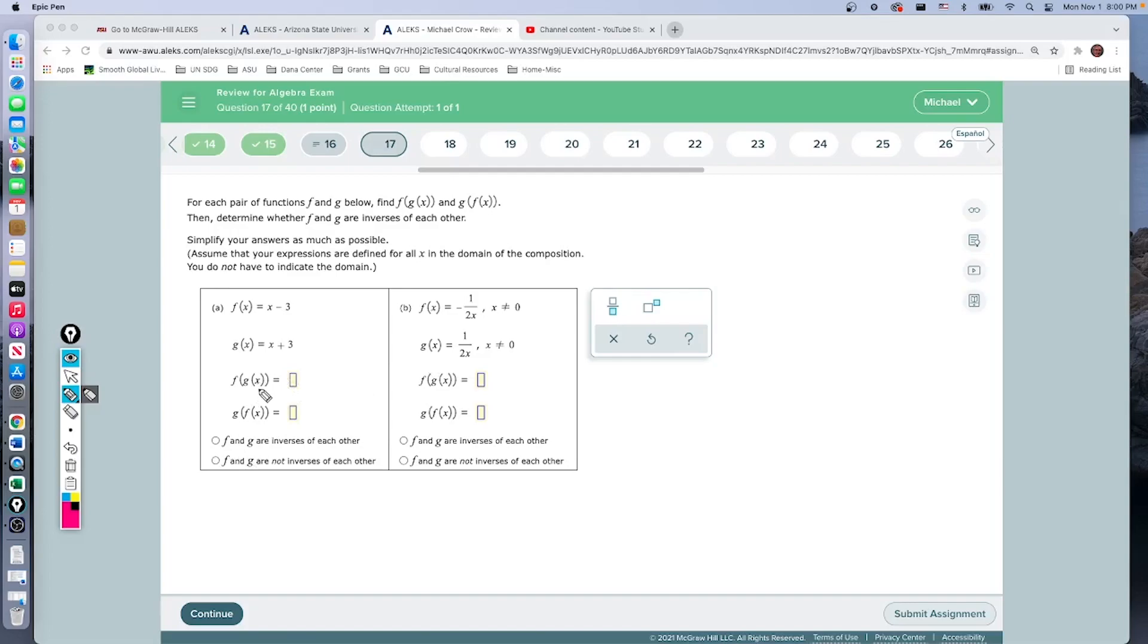The way we go about using composition to prove that is we take a composition of one function into the other. We do f composite g, then we do g composite f. If we end up where we started, they are inverses. Where do we start? We start at x. In both cases, we have to end up back at x—not negative x, not 3x, not x plus 2, but x.